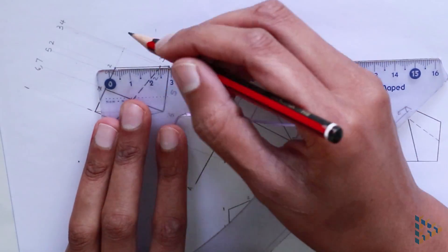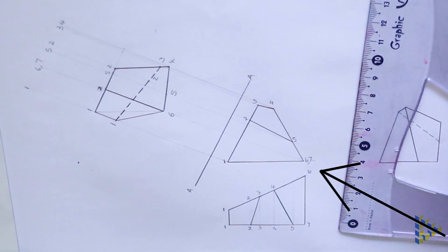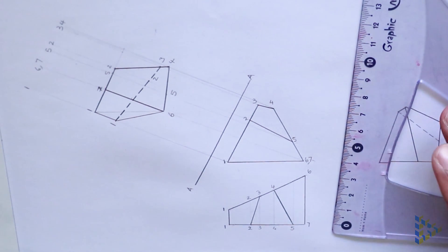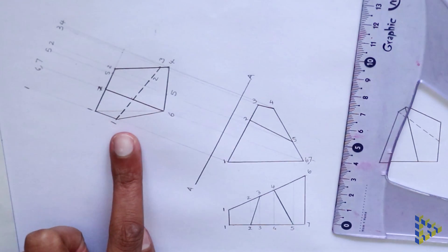Do a logic check. Viewing the object from this side, we should immediately see 1, 6, 7, 5, and 4. However, the line 1, 2, and 3 should not be visible.